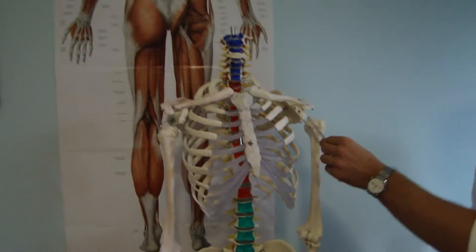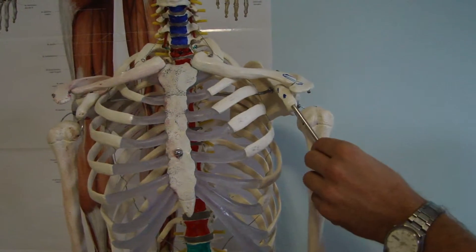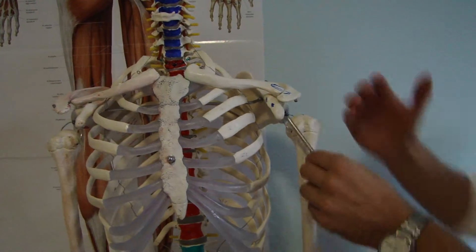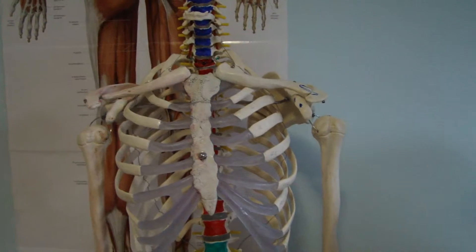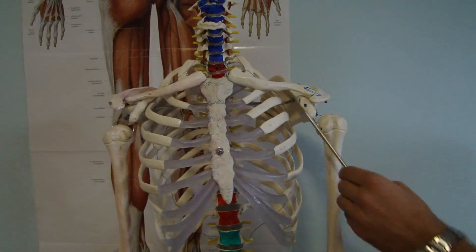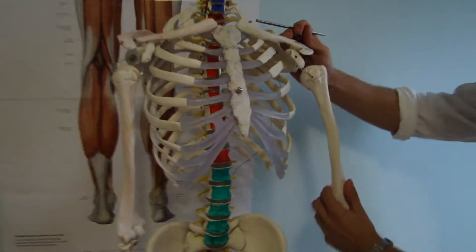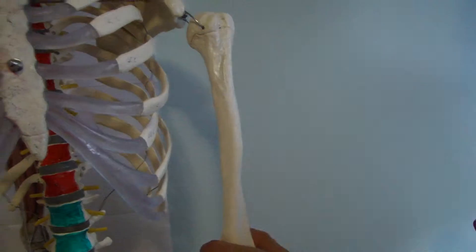And then we have coracobrachialis which originates from the tip of coracoid process. This is also insertion for pectoralis minor and origin for the short head of biceps brachii. It goes down onto the middle third of medial surface of humerus.